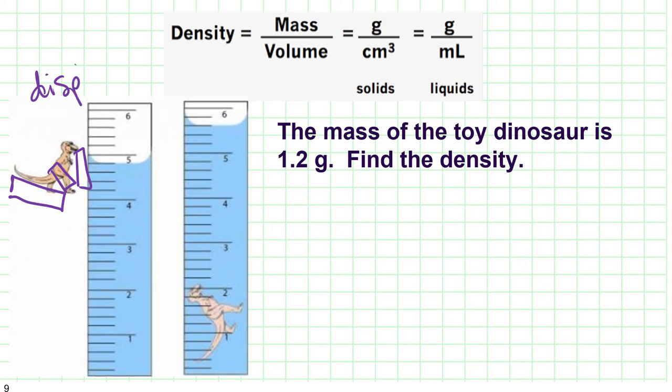So what we're going to do instead is volume by displacement. Made famous by Archimedes and his Eureka investigation, where he plopped himself into his own bathtub. So we are going to take Mr. Dinosaur. We're going to plop him into that graduated cylinder.